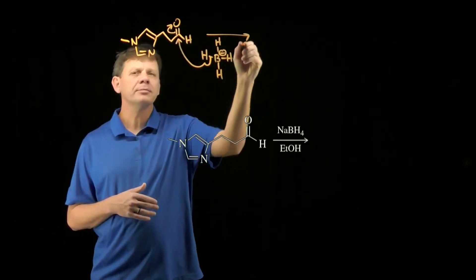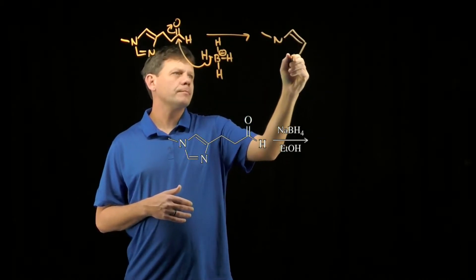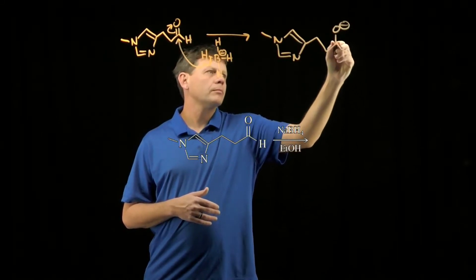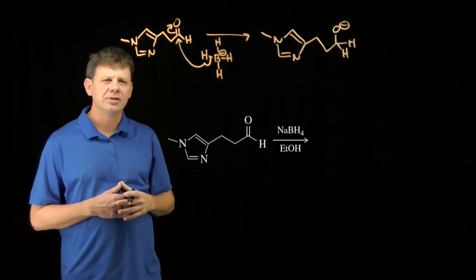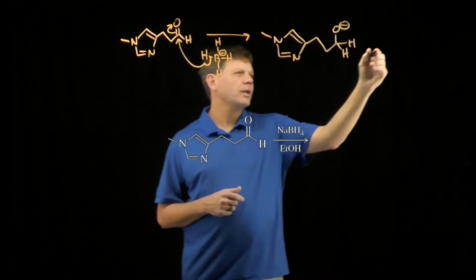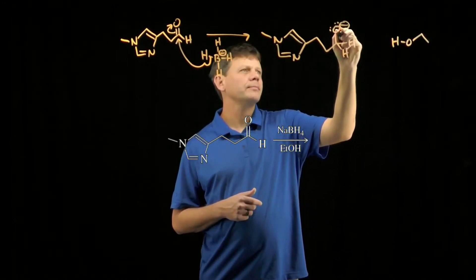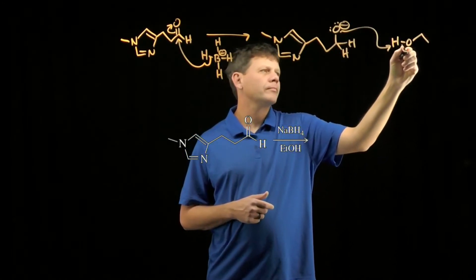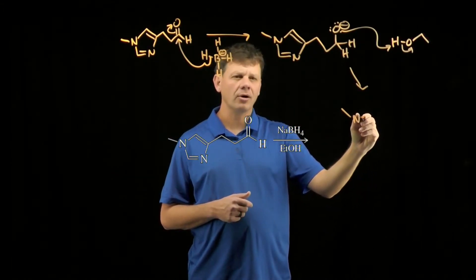When it does this, we end up with an alkoxide product where we have a negative charge on that oxygen. With ethanol around as the solvent, we can now protonate that alkoxide to complete the reaction, giving us this primary alcohol.